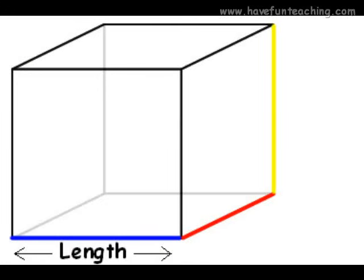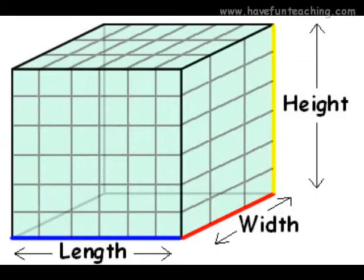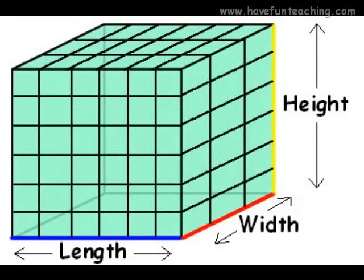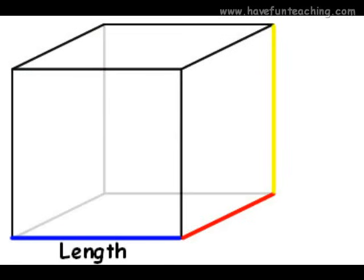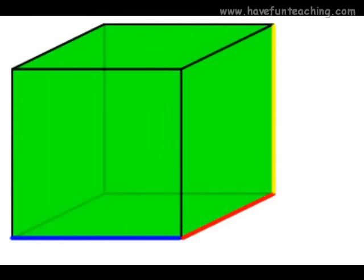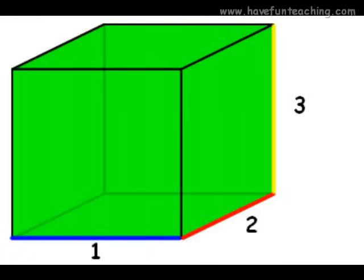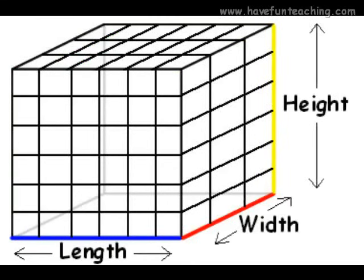Length is long, height is high, width is wide. The volume measures all the cubic units inside. Take a solid shape, one that's three dimensional, make a formula — that's all so simple. Length times width times height gives you the volume.